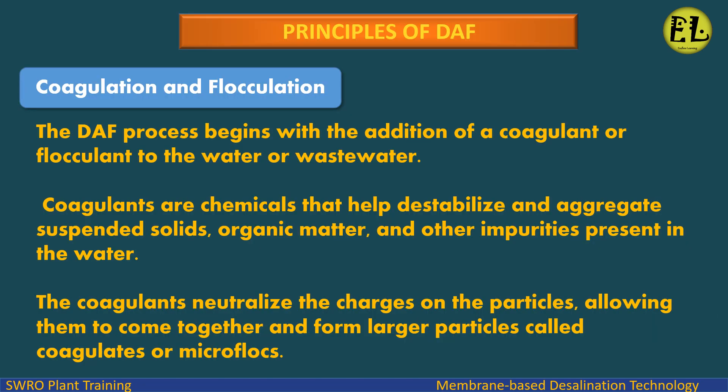Principles of DAF: Coagulation and Flocculation. The DAF process begins with the addition of a coagulant or flocculant to the water or wastewater. Coagulants are chemicals that help destabilize and aggregate suspended solids, organic matter, and other impurities present in the water. The coagulants neutralize the charges on the particles, allowing them to come together and form larger particles called coagulates or microflocs.